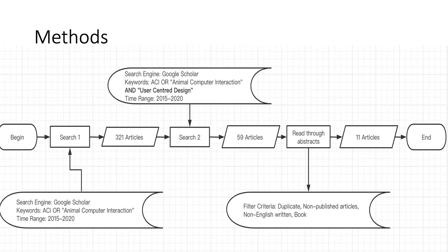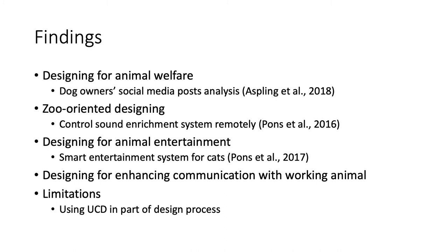After being a little familiar with ACI, now let's have a look at methods that are used to scope articles. This chart is the scoping process. At last, I selected 11 articles for this report.